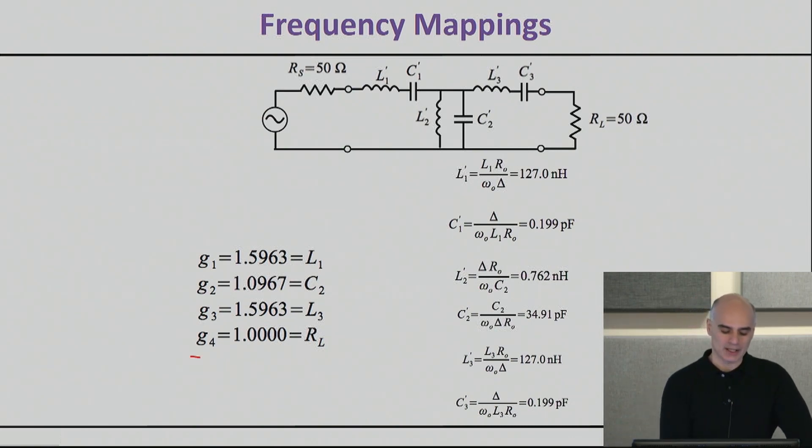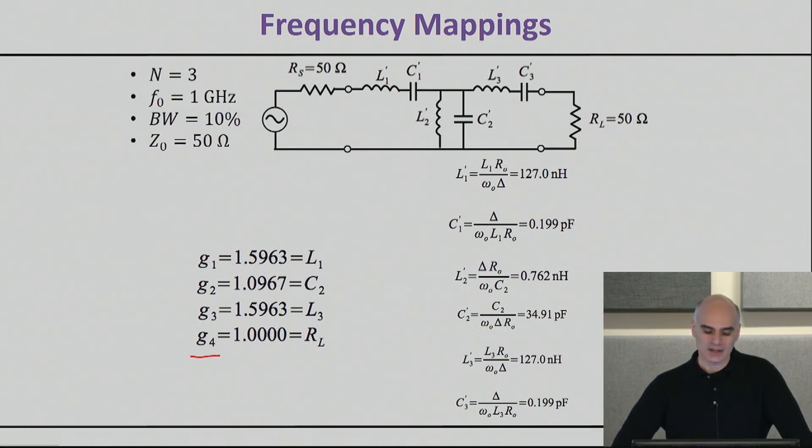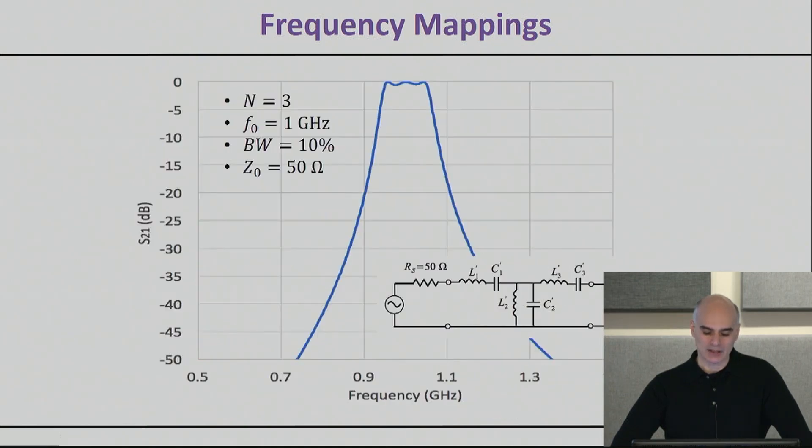So this is an example where all the G elements are known in the normalized domain, and then I want to design basically a bandpass filter. Here I'm going with a conventional approach, there are no inverters yet, and so it gives you all the new elements, and then it gives you basically, well these are the requirements, and then it gives you essentially the confirmation that if you were to plot the s-parameters of this newly scaled prototype, you will actually get exactly what we want.